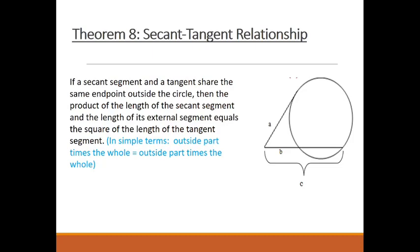Here's our last theorem. This is the secant-tangent relationship. We're going to call it Theorem 8. If a secant segment and a tangent share the same endpoint outside the circle, then the product of the length of the secant segment and the length of its external segment equals the square of the length of the tangent segment. What I want you to realize is this is really the same theorem that we just learned. It just looks a little different because we have a tangent here instead of a secant.